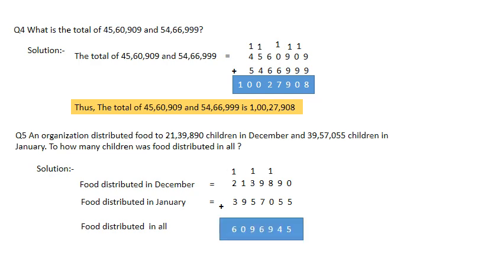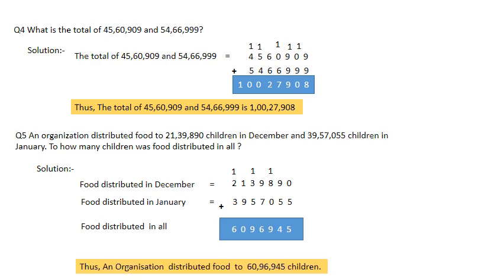Let's check the answer. 0 plus 5 is 5; 9 plus 5 is 14 — carry 1; 8 plus 0 is 8, plus 1 carry is 9; 9 plus 7 is 16 — carry 1; 5 plus 3 is 8, plus 1 carry is 9; 9 plus 1 is 10 — carry 1; 3 plus 2 is 5, plus 1 carry is 6. Thus, the organization distributed food to 60,96,874 children in all.